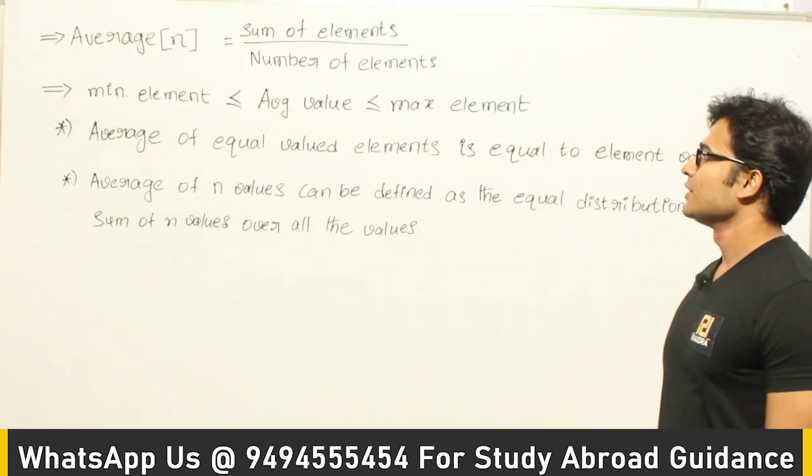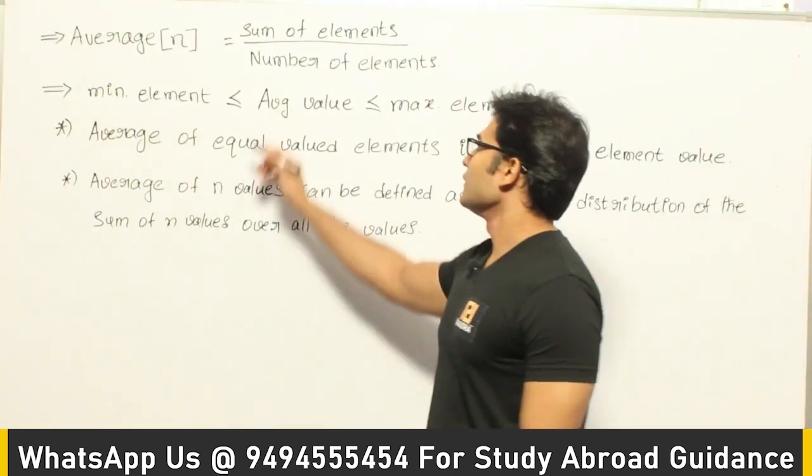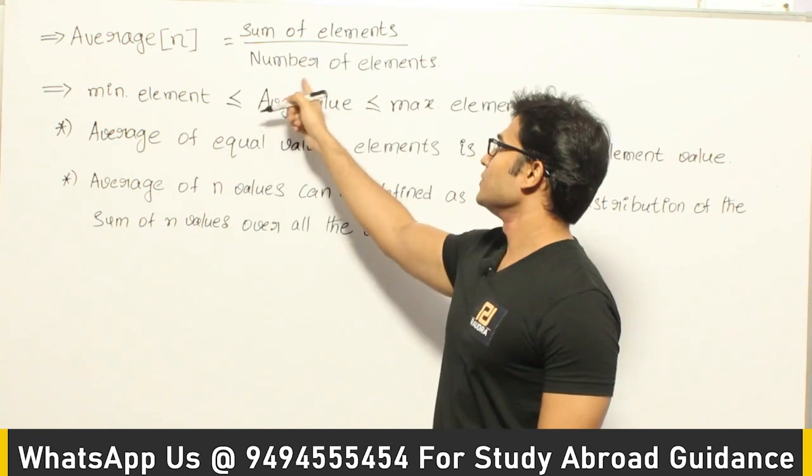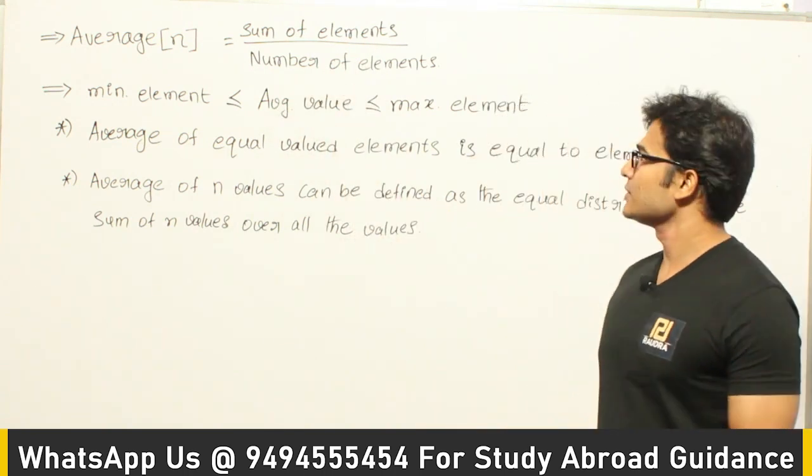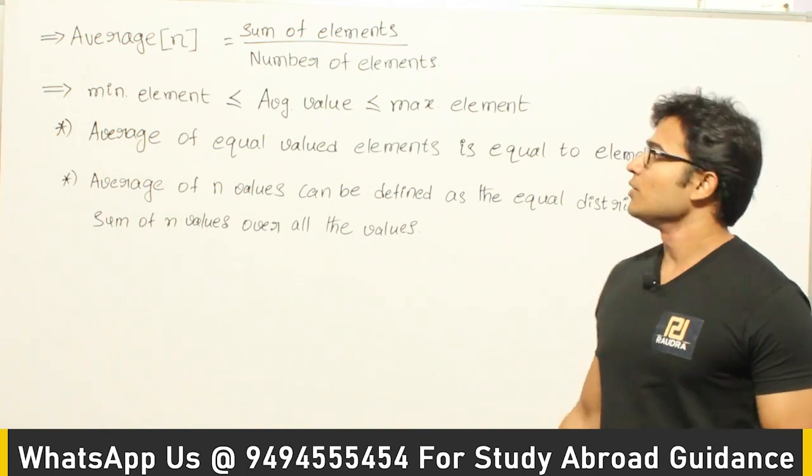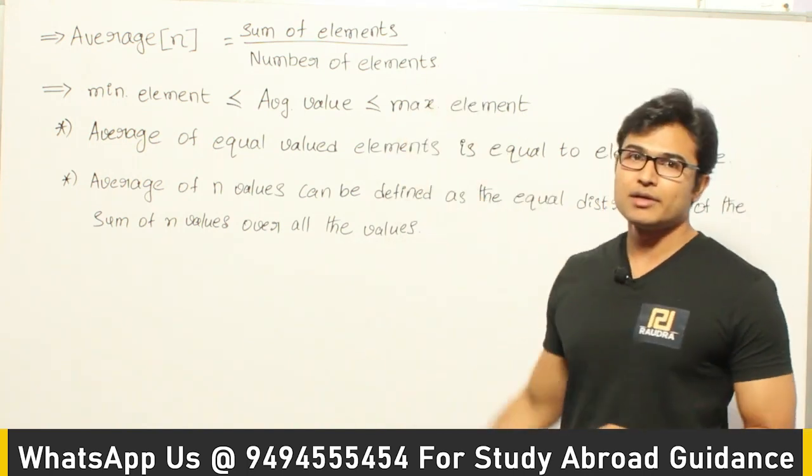Now let's see the topic of averages. So average of n values is equal to sum of all the n values divided by number of elements. In this case, since we assume that the number is n, you can say that sum of elements divided by n.